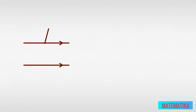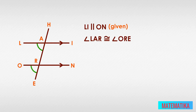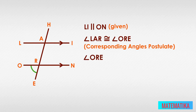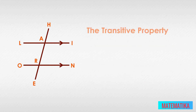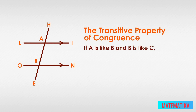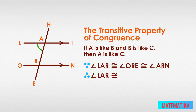Let's prove both of these theorems with our figure. LI and ON are parallel lines — given. Transversal HE — given. LI is parallel to ON, given. Angle LAR is congruent to angle ORE by the corresponding angles postulate. Angle ORE is congruent to angle ARN by the vertical angles theorem. Therefore, angle LAR is congruent to angle ARN by the transitive property of congruence, which says: if A is like B and B is like C, then A is like C.